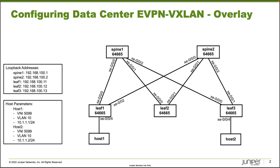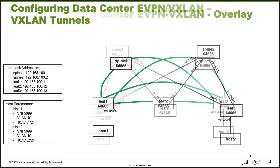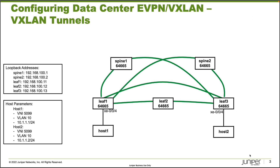The overlay network is set up and functioning — technically it's not passing routes yet because we haven't set up eVPN VXLAN, but the IBGP sessions have family eVPN signaling configured. The next slide shows how VXLAN tunnels will form: leaf one and leaf three, since they have directly connected host devices, will form VXLAN tunnels to every other device — spine one, spine two, leaf two, and each other.